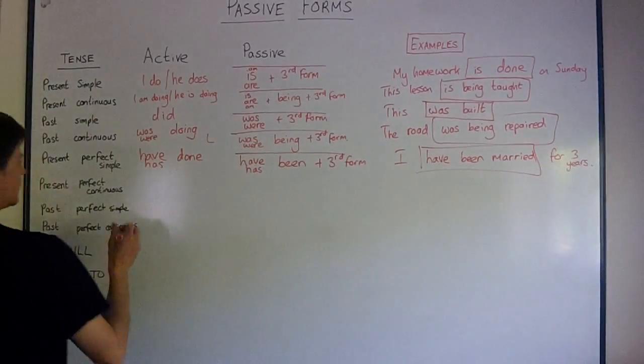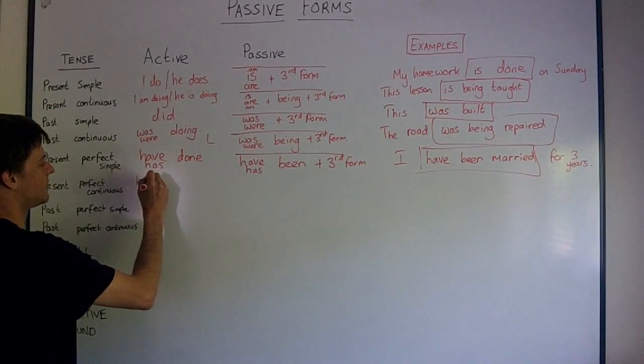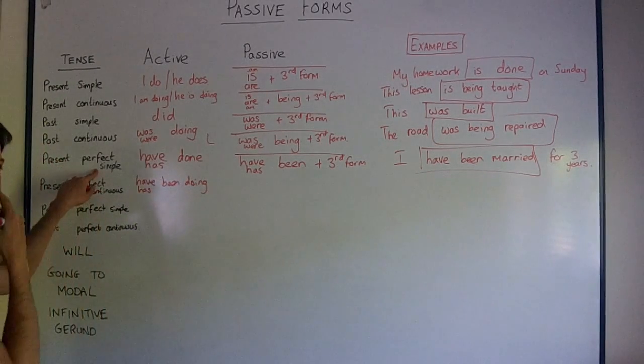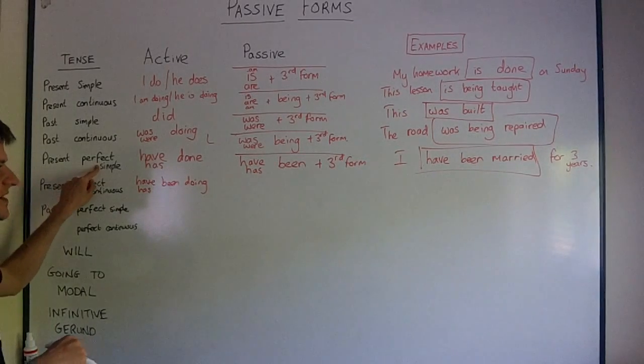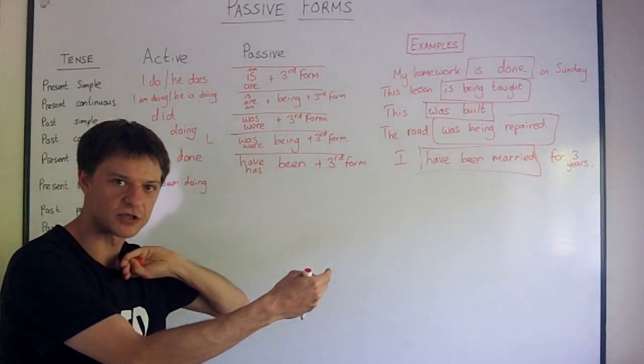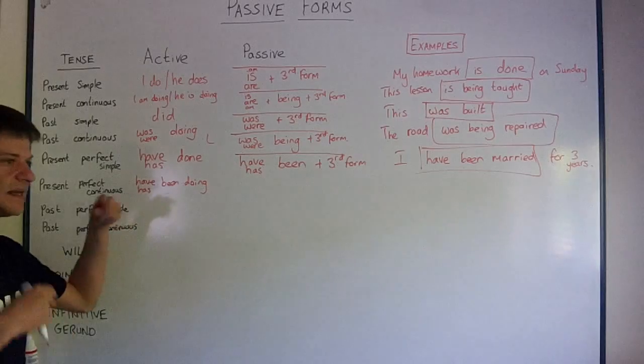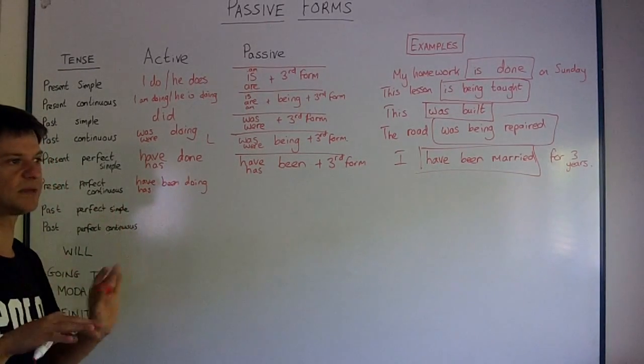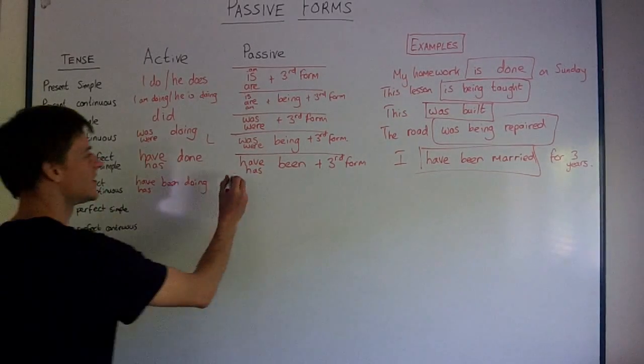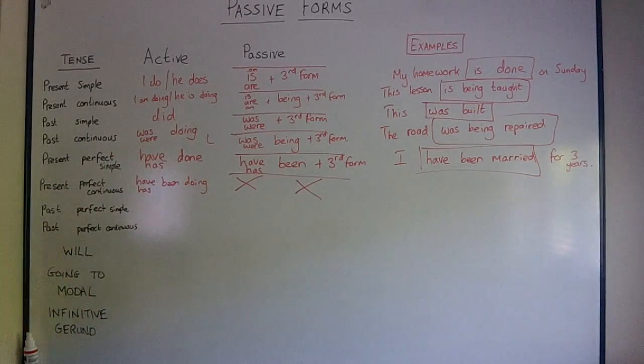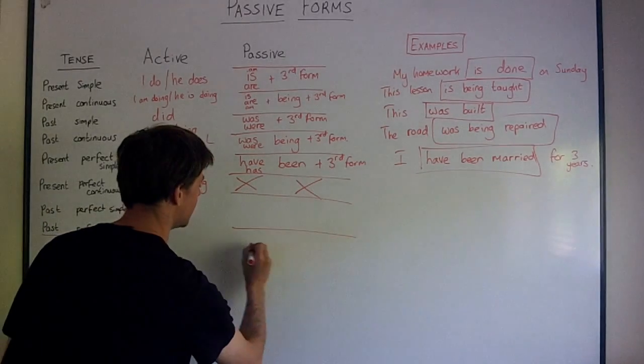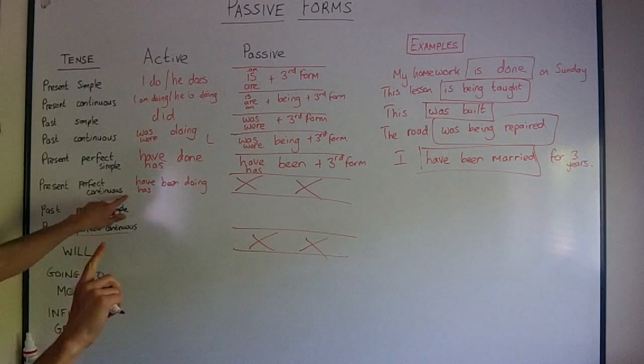Now the next one, present perfect continuous, I hope you all remember, it's have or has been doing. We use it when we want to. It's very similar to present perfect simple, but we use simple for stative verbs. We use continuous for non-stative verbs, especially when we're emphasizing duration, not result. So I have been living in England for two years. He has been working in this company for three months. So there is no passive form with present perfect continuous. And there's no passive form with past perfect continuous either. There's no passive form. You can't put it in passive. Don't even try.